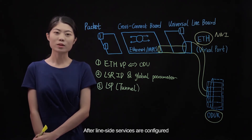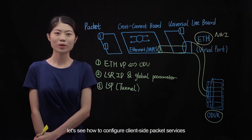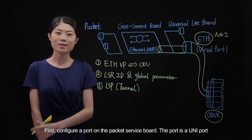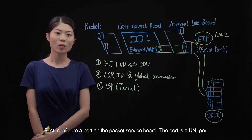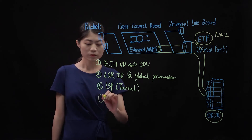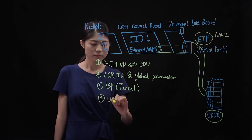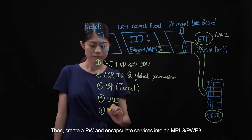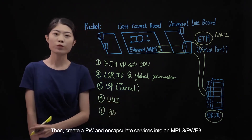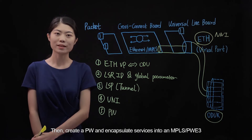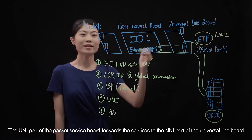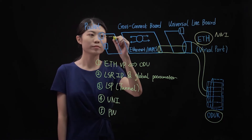After line-side services are configured, let's see how to configure client-side packet services. First, configure a port on the packet service board — the port is a UNI port. Then create a PW and encapsulate services into an MPLS/PWE3. The UNI port of the packet service board forwards the services to the NNI port of the universal line board.